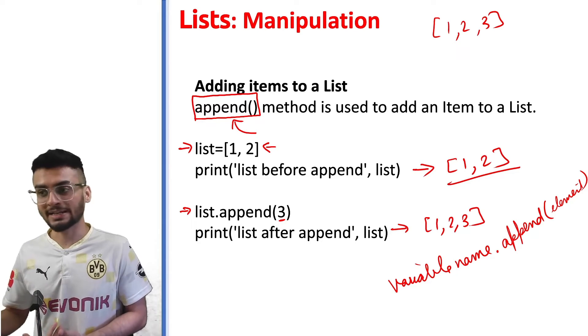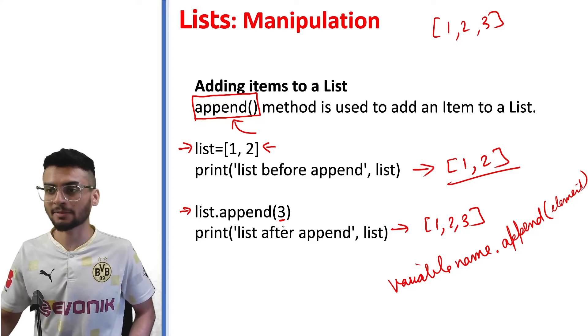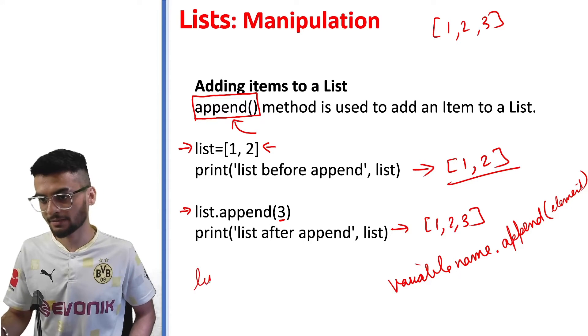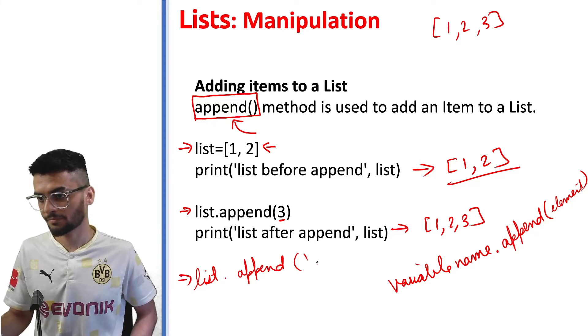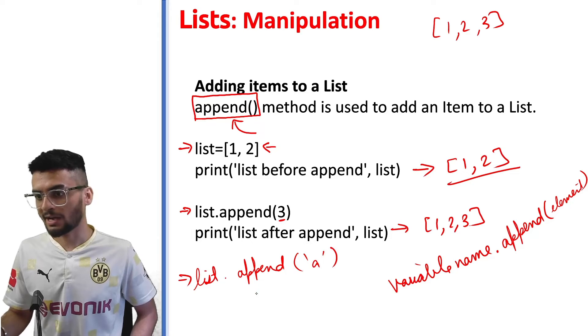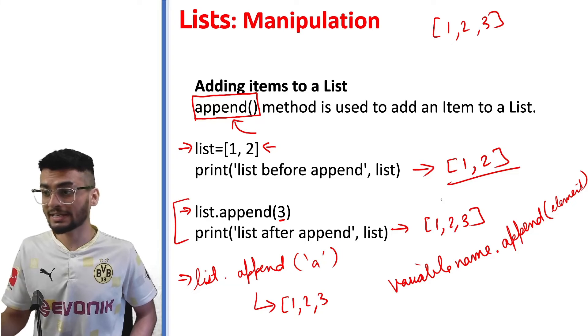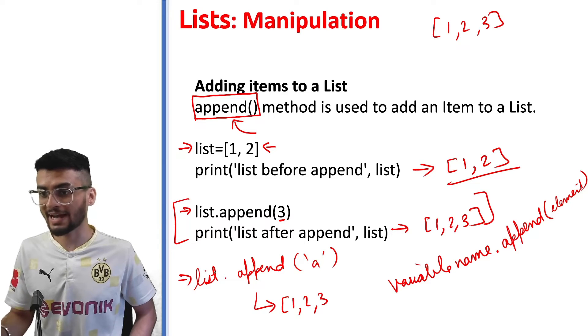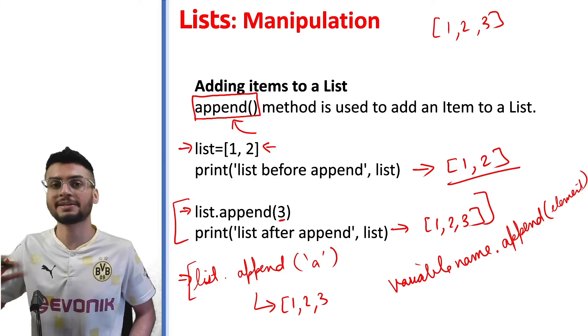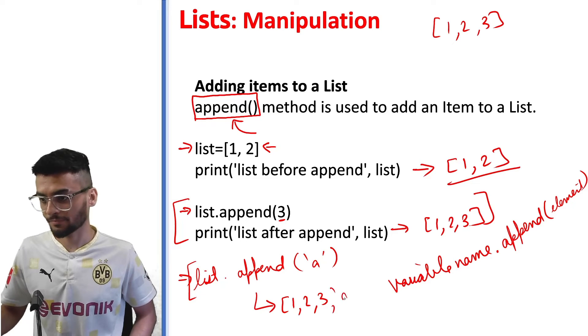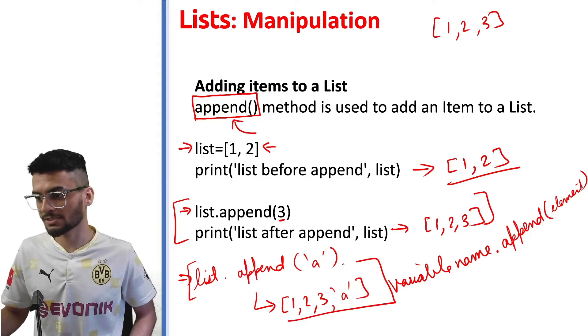You can also try out other elements. It's not necessary that you have to use the same data type. If I write - if the next thing which I write is list dot append 'a' - the output for this would be one comma two, three. We already joined three here, that is the reason three is coming. And finally we also append another element which is 'a', so your final list becomes this.